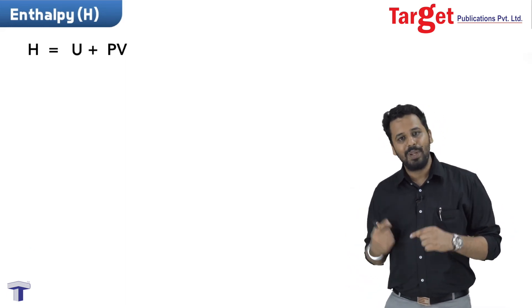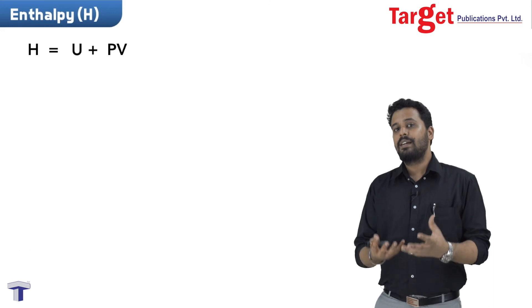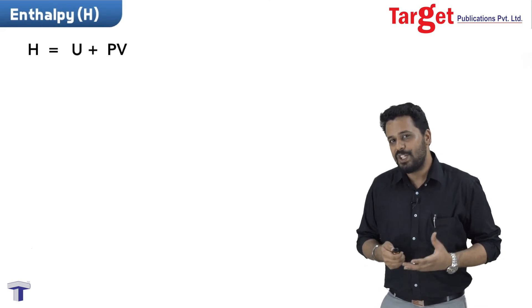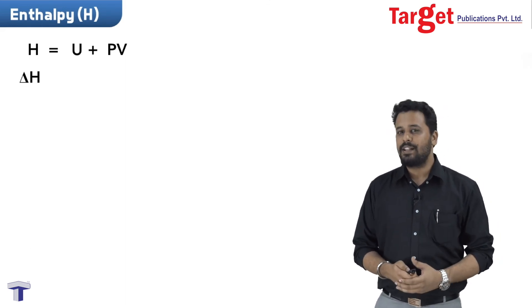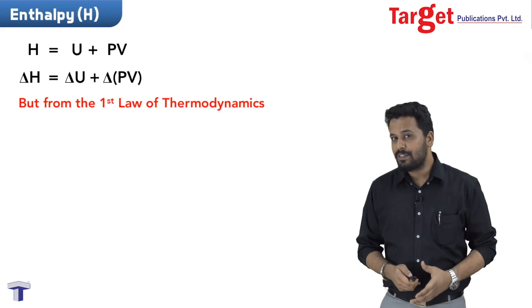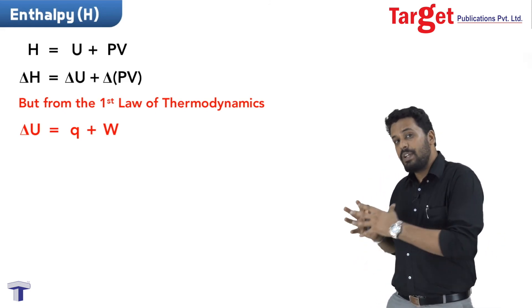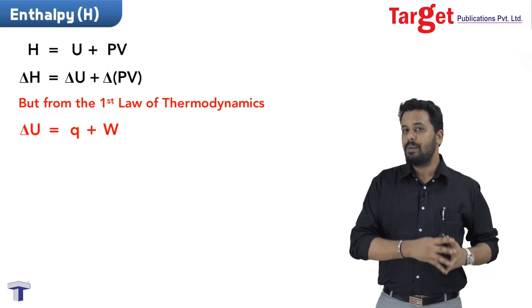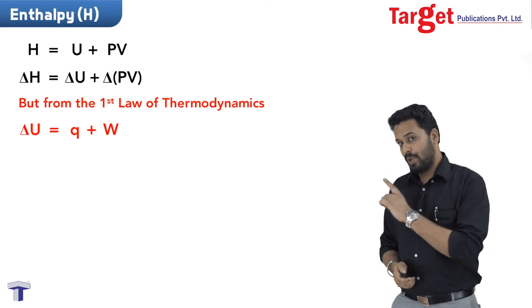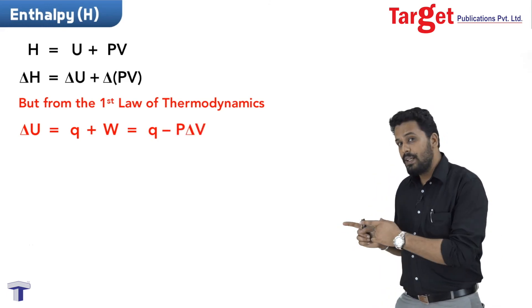Toh unka jo expression hoga wo bhi state function hoga. Now, if I want to measure change in enthalpy — that is heat absorbed or released between stage 1 and 2 — I can say that ΔH = ΔU + Δ(PV). From the first law of thermodynamics, ΔU = Q + W. And I know that work W = −P_external × ΔV. So I can write this expression as Q − PΔV, where P is the external pressure.